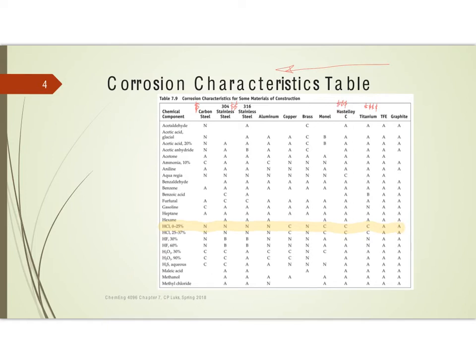For dilute hydrochloric acid, it's a no on almost all of these materials. You finally start seeing C ratings at copper and monel. It isn't until you get to TFE and graphite that you finally get to A ratings. TFE is going to be Teflon, so you're going to line your material with Teflon for these dilute acids, or you can use graphite. You're going to see several chemicals like this where there are not many choices.